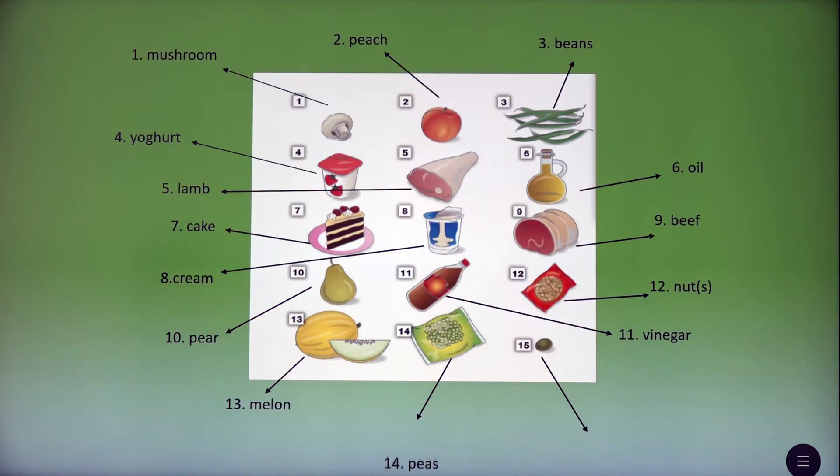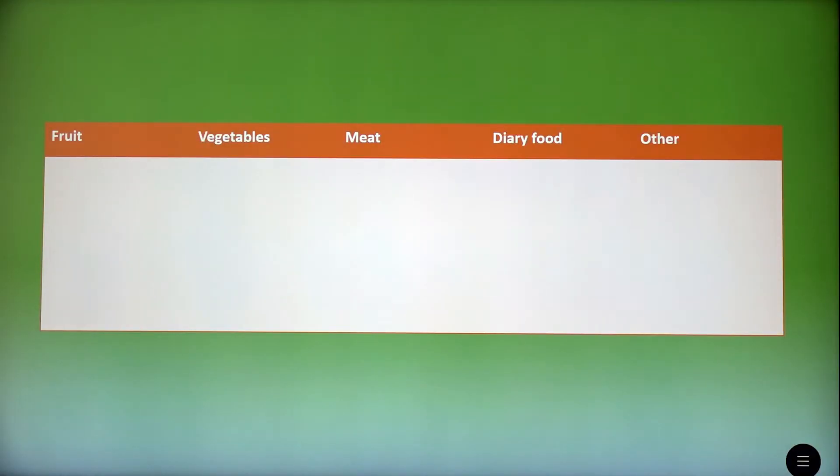Fourteenth, it's peas. And the last one, fifteenth, it's olive. So, you're able to name each one now. Let's try to divide food and drinks into groups. You have the groups. You can see the groups in the screen. It's fruit, vegetables, meat, dairy food and others.